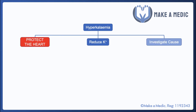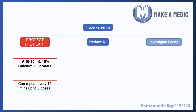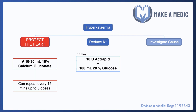The main concern with hyperkalemia is that it can lead to fatal ventricular arrhythmias, so prompt management is essential. First and foremost, before addressing the serum potassium level, we need to protect the heart by giving IV calcium gluconate — 10 to 30 mls of 10% calcium gluconate, which can be repeated every 15 minutes up to five doses. To actually reduce the potassium level, the mainstay of treatment is 10 units of Actrapid insulin along with glucose — specifically 100 mls of 20% glucose — to prevent hypoglycemia, since the insulin is used to drive potassium into cells. A second-line option is a salbutamol nebulizer, which can also help drive potassium into the cells.